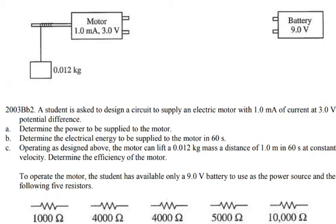Determine the power to be supplied to the motor. To calculate the power needed for the motor, we could use the power formula, which is P equals I times V. The current is given 1 milliamp and the voltage is given 3 volt.